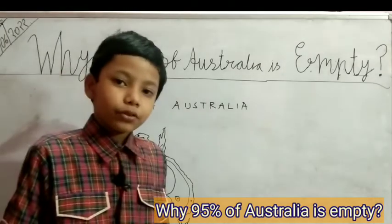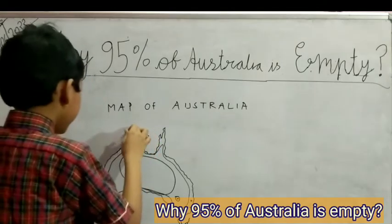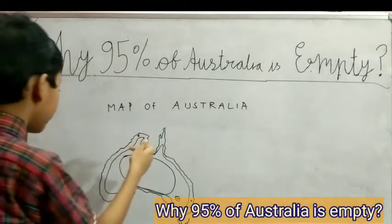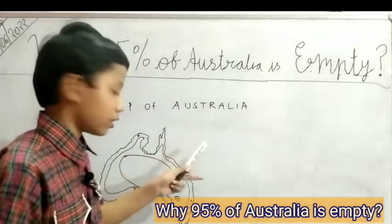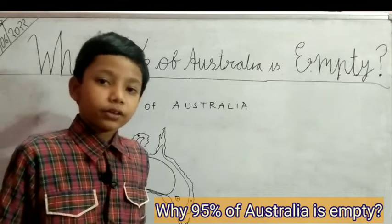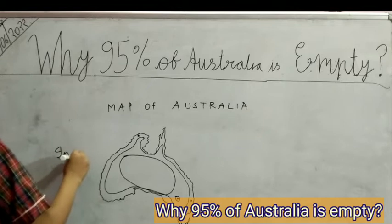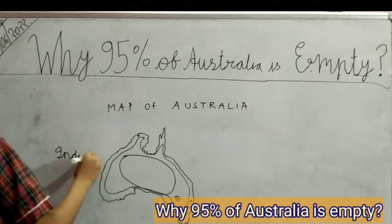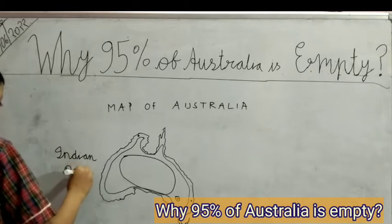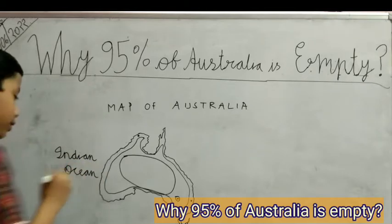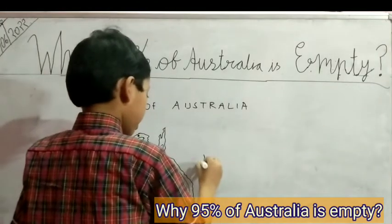Yes, and Darwin also touches the Indian Ocean right there. The Indian Ocean is on this side and the Pacific Ocean is on this side. Now let's write the ocean names. This is the Indian Ocean. And now for the Pacific Ocean, which is on this side.